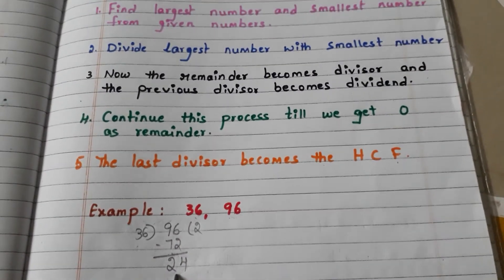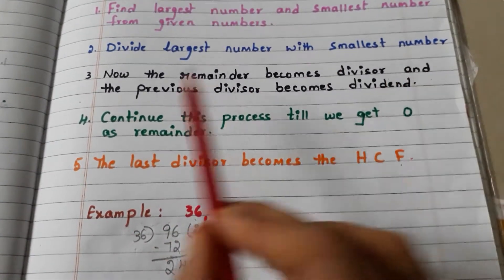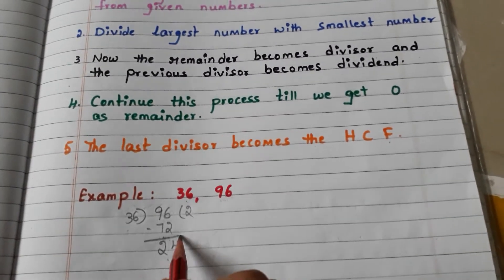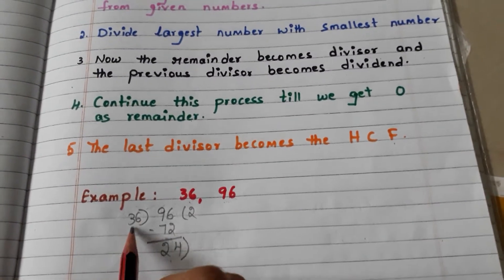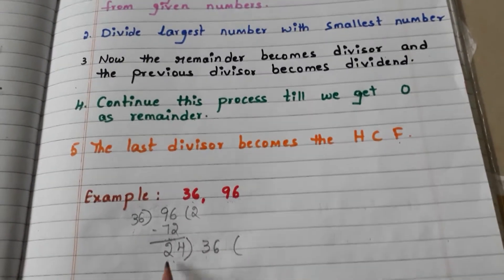Go to step 3: now the remainder becomes divisor and the previous divisor becomes dividend. Here we have the remainder 24. Now 24 becomes divisor and the previous divisor 36 becomes dividend. Okay, 1 times 24 is 24, 6 minus 4 is 2, 3 minus 2 is 1.